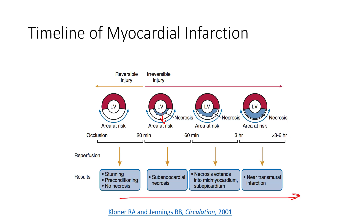Within 20 minutes there's no death, but as we go longer we move into irreversible injury and cell death. Beyond three hours, we can see what we call a transmural infarction, where we've got a full-thickness death of tissue. So the goal is really to try to get people into the cath lab and stented, or at least have the vessel opened up, ideally within the first 30 minutes and at most an hour to 90 minutes. That's the goal to get people into the cath lab.